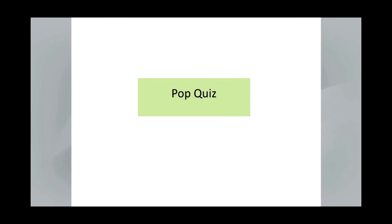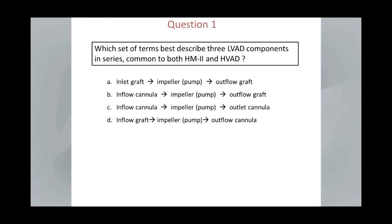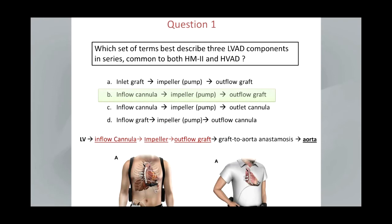Now I'd like to conduct a pop quiz. Which set of terms best describes the three LVAD components in series, common to both the HeartMate II and the HVAD? The answer is B: inflow cannula, impeller, and outflow graft. The reason this was important to address specifically is that in the literature there have been a lot of different names used for the inflow cannula and for the outflow graft. If we are speaking the same language, that can facilitate communication.